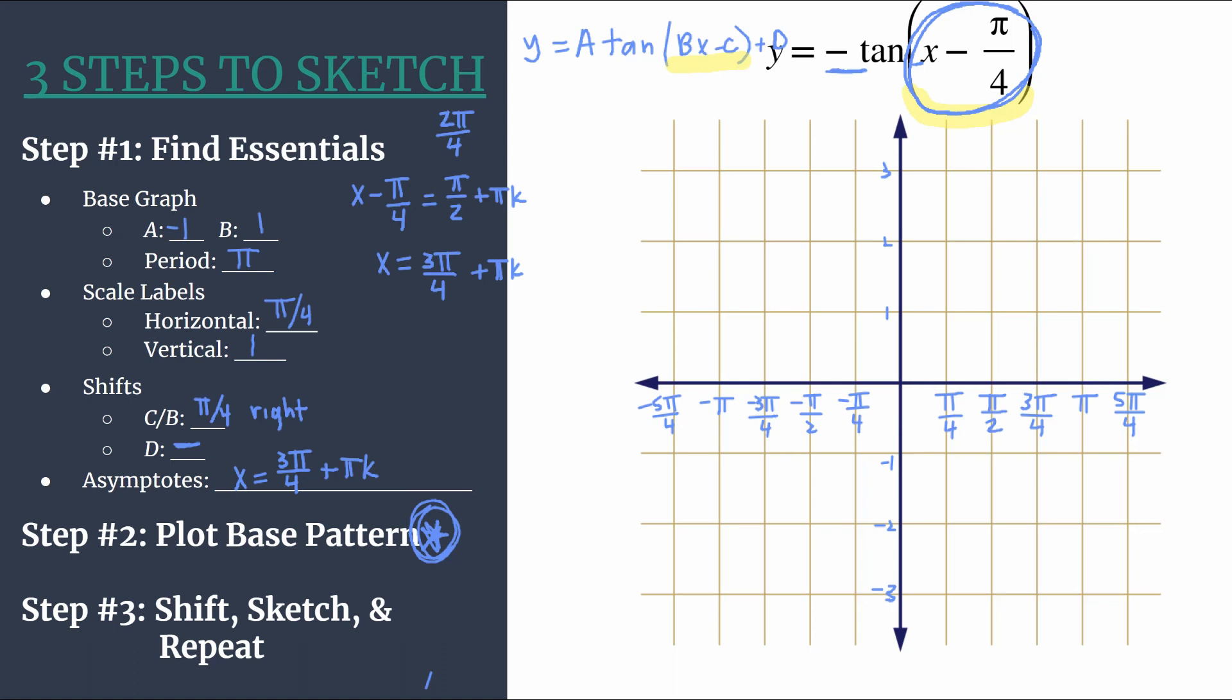This is showing us where all of our asymptotes are. You can get those simply by plugging in different integers for K. If you let K equals zero, we should have an asymptote at three π over 4 on our final graph. If you let K equal one, you'd add π to three π over 4, so you'd have another asymptote at seven π over 4. If you let K equal negative one, that'd be three π over 4 minus π, so another asymptote at negative π over 4. This is really nice to know as we get to creating our graph, and we can use this to double check ourselves. Sometimes it's just nice to know where the vertical asymptotes will be.